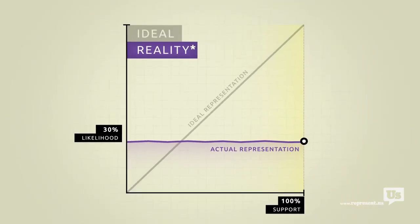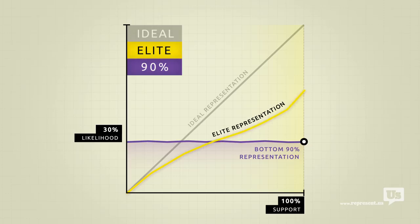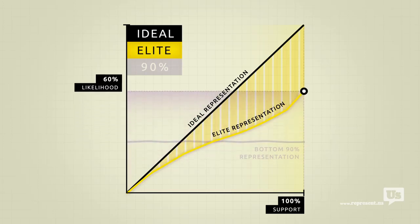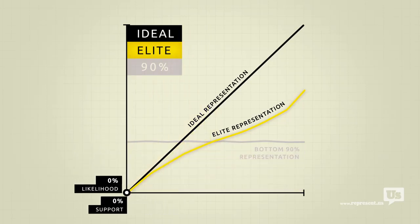But there's a catch. This flat line only accounts for the bottom 90% of income earners in America. Economic elites, business interests, people who can afford lobbyists, they get their own line. Look at how much closer their line is to the ideal. When they want something, the government is much more likely to do it. And when they don't, they have the power to completely block it from happening, no matter how much the rest of the country supports it.